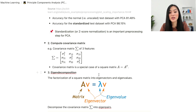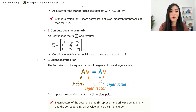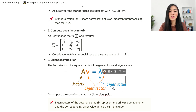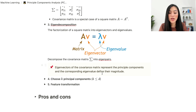The equation Av = λv applies to all square matrices, where A is a square matrix, v is an eigenvector, and λ is an eigenvalue. We decompose the covariance matrix sigma into eigenpairs. The goal of eigen decomposition is to find the principal components: eigenvectors of the covariance matrix represent the principal components, and their corresponding eigenvalues define their magnitude.